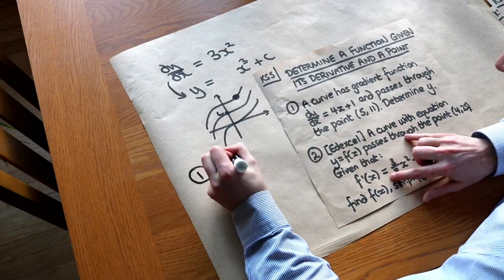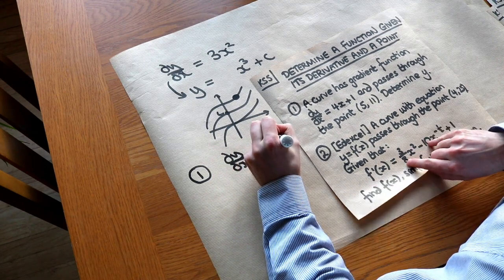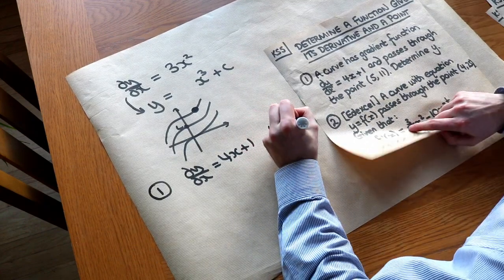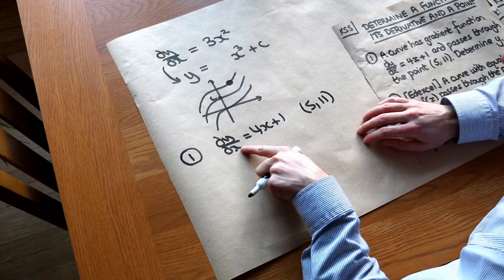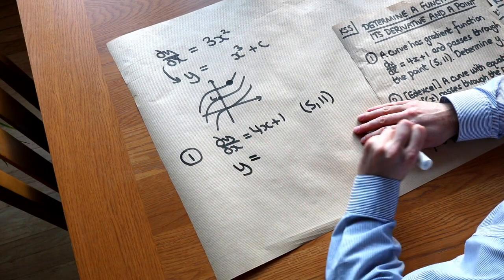So let's use that with this first question. A curve has gradient function dy/dx is equal to 4x + 1, and we're told it passes through (5,11). So determine y. Now, if we know the gradient function, we can find the original function by integrating.